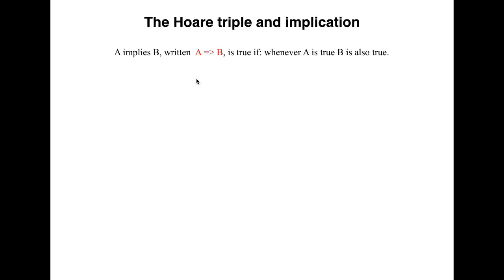Let a and b be Boolean expressions. a implies b, written like this, is true if whenever a is true, b is also true. Here is an example, which is obviously true.